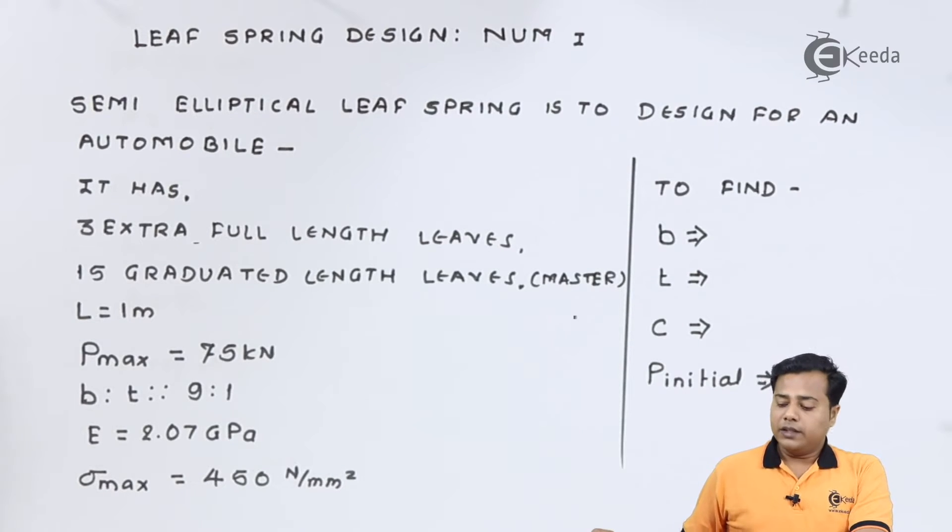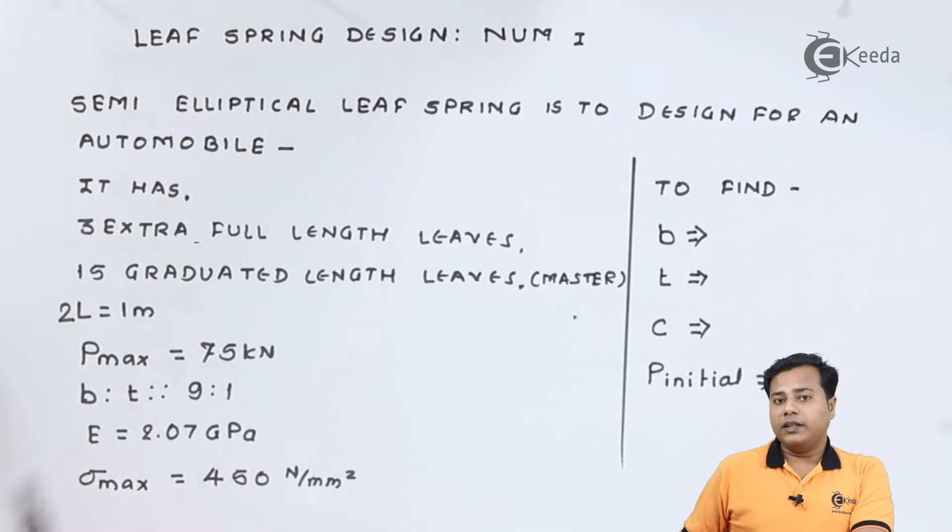Further, the length L_ctc is given 1 meter. So it is twice the length because it is the center to center distance. Further, the maximum force P_max is given 75 kilonewton.